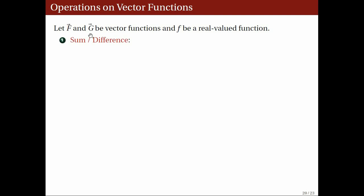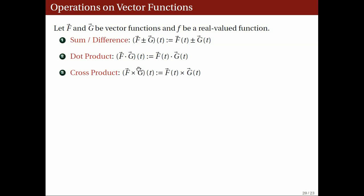The sum of capital F and capital G is defined naturally enough. The sum, denoted by capital F plus capital G, is defined to be the function whose value at t is the sum of the values of F and G at t. The difference is similarly defined, and so are the dot product and the cross product of these two vector-valued functions. Note that the sum, difference, and cross product of two vector functions is also a vector-valued function, because the sum, difference, and cross product of two vectors is also a vector. Meanwhile, the dot product of two vector functions is a real-valued function, because the dot product of two vectors is a scalar.